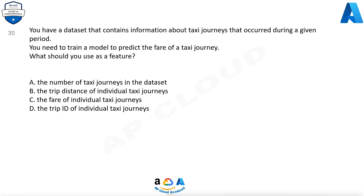Question 30. You have a dataset that contains information about taxi journeys that occurred during a given period. You need to train a model to predict the fare of a taxi journey. What should you use as a feature? A. The number of taxi journeys in the dataset. B. The trip distance of individual taxi journeys. C. The fare of individual taxi journeys. D. The trip ID of individual taxi journeys.